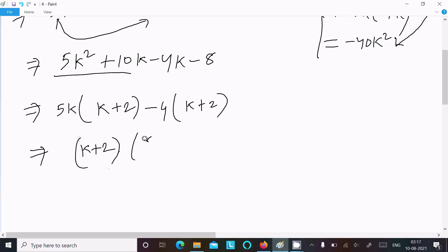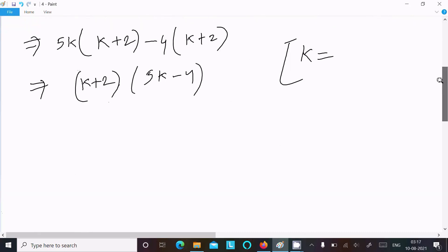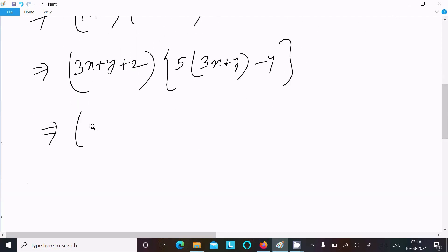Now k + 2 is the common, and here 5k and here 5k - 4. And k that I assumed is 3x + y, so writing in the place of k: (3x+y+2) and the next is 5(3x+y) - 4.